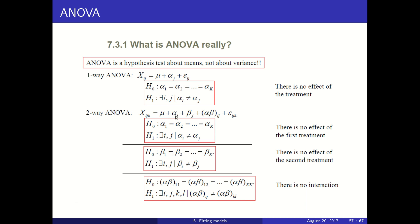For two-way ANOVA — the football example — we can set up different null hypotheses: one on the first factor (player playing or not), one on the second factor (strategy), or one on the interactions. The null hypothesis is always the same structure: no difference between the different levels of that factor — no difference in the player, no difference in the strategy, or no difference in the synergies.